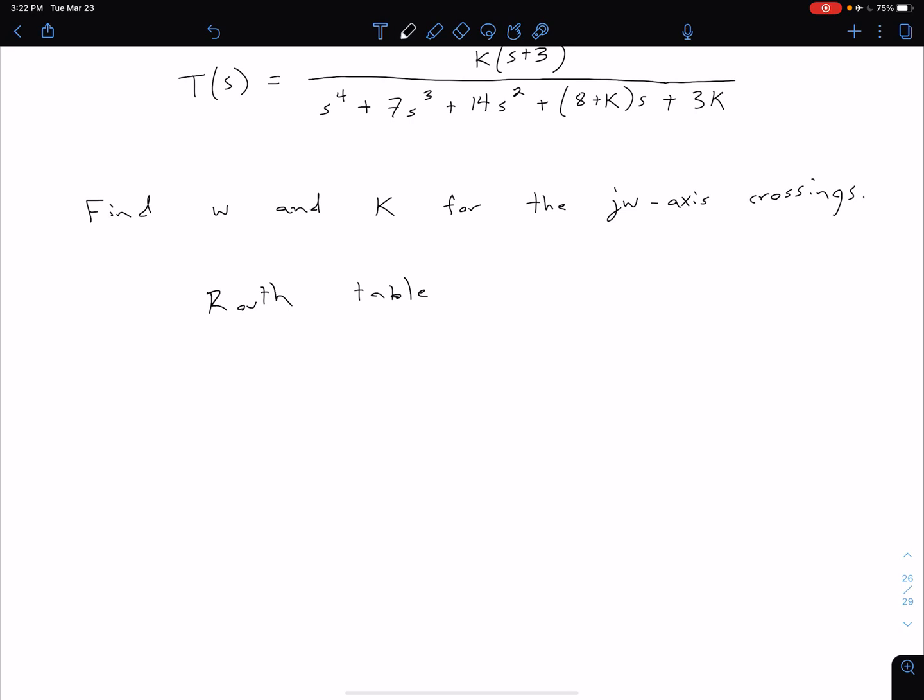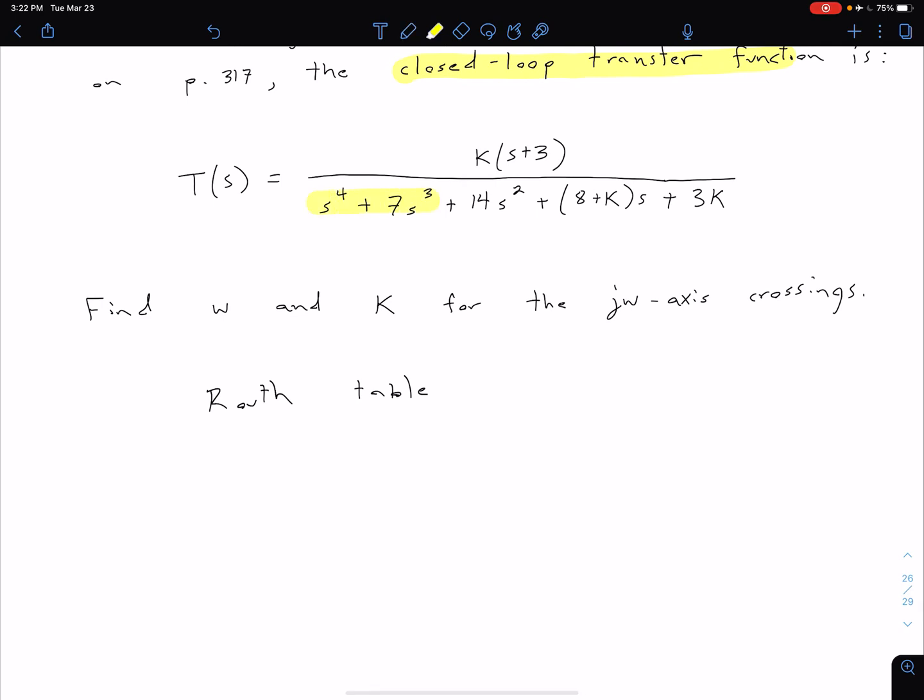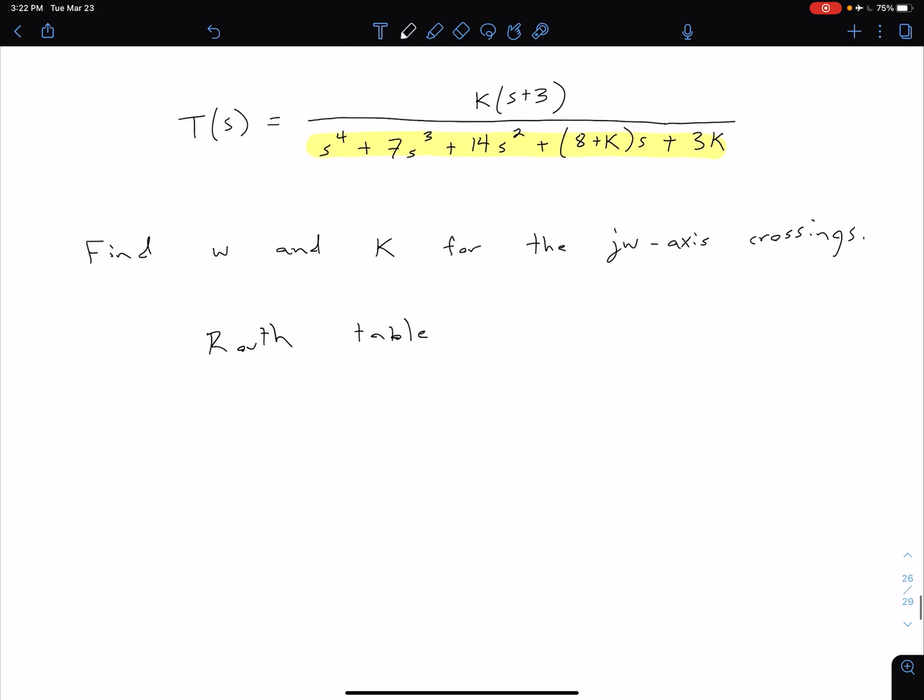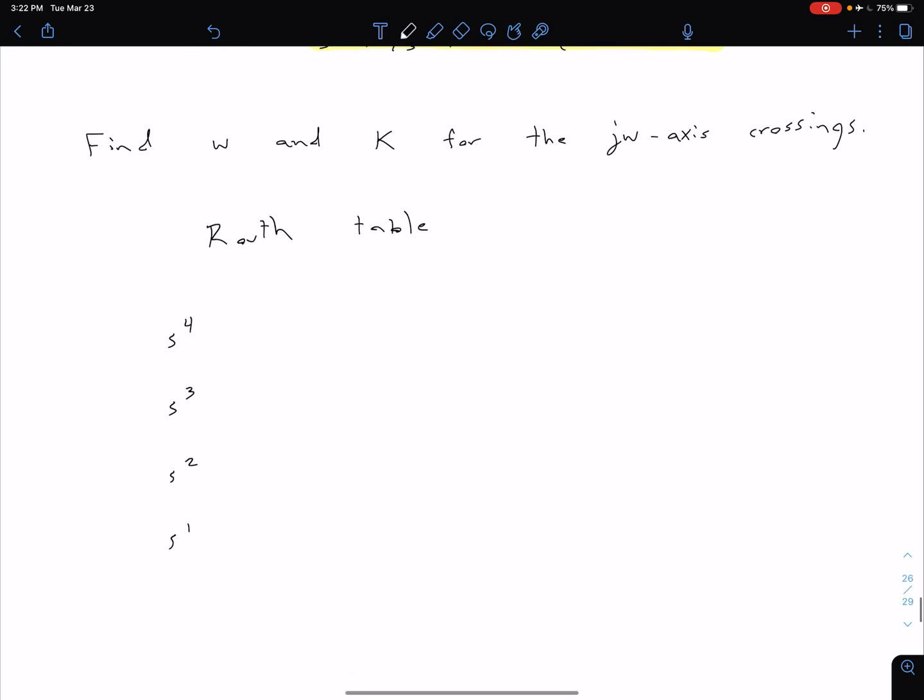Whenever we're talking about stability, of course, Routh table is what we want to think. With our Routh table, we're interested in the denominator of this closed-loop transfer function. We see the highest order there is s to the fourth, so we can start our Routh table by labeling our rows: s to the fourth, s cubed, s squared, s to the first, and s to the zero.